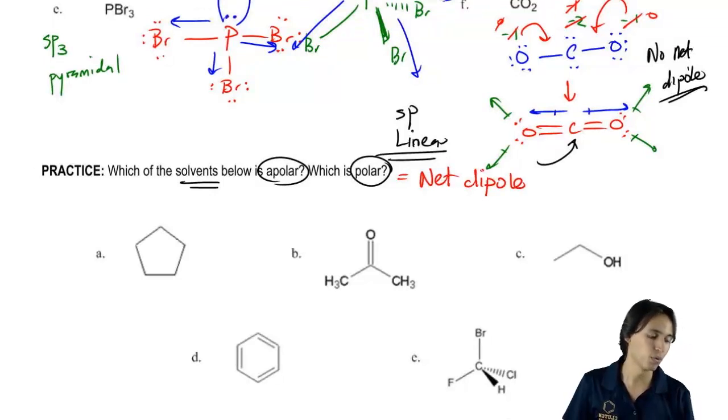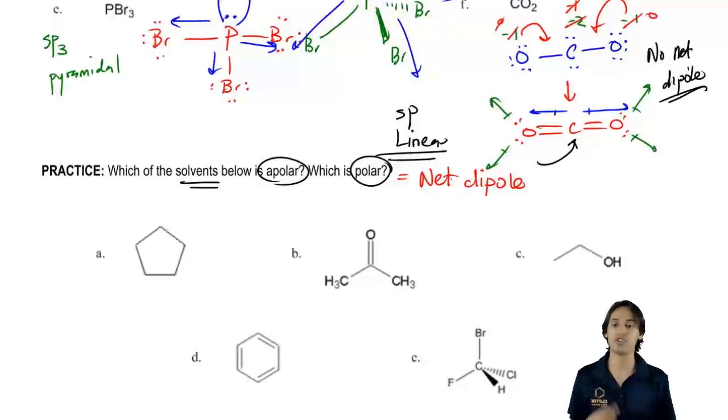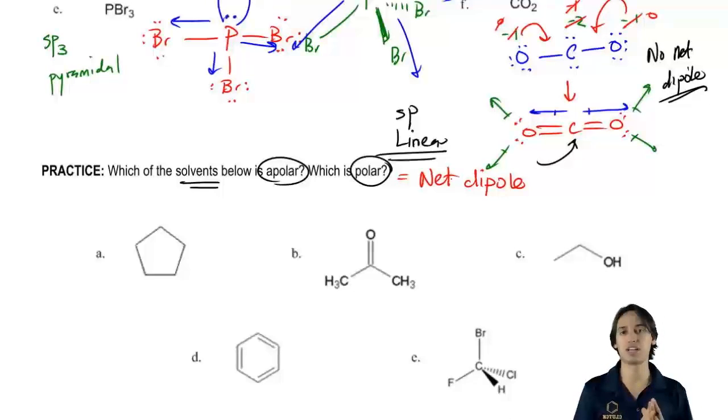If it has a net dipole, we call that a polar solvent. If it has no net dipole, I call that apolar. What I want you guys to do is tell me which of these would be polar, which of these would be apolar based on the presence of a net dipole. So go ahead and pause the video and try to answer all of these.